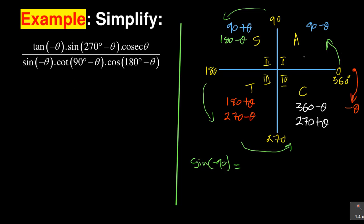In the fourth quadrant, remember your CAST diagram: cosine is the only one that is positive, meaning sine is negative and tan is negative. So cos is positive but sine and tan are negative according to the CAST diagram.